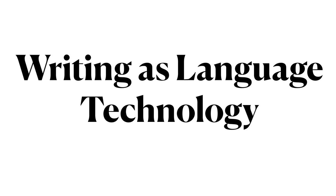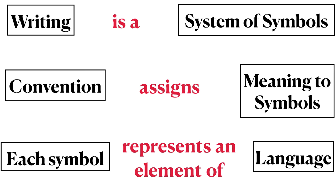This is Ling270, Language, Technology, and Society. We continue now with our examination of writing as language technology, looking at the severe challenges we face when attempting to communicate with the far future. We have established that writing is a language technology, implemented as a system of symbols. Convention is used to assign meaning to those symbols, and in a human language writing system, each symbol represents an element of language.